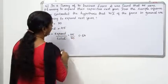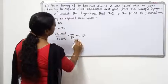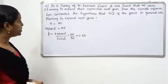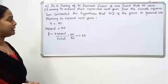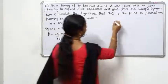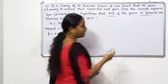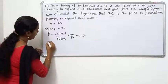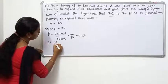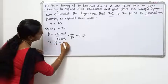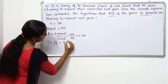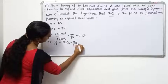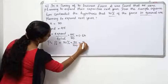So the sample proportion is 45 by 70, which equals 0.64. The hypothesis states that 70% of firms in general are planning to expand, so the population proportion capital P is 70% by 100, equal to 0.7.